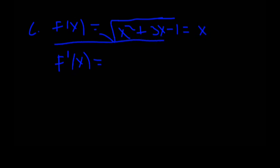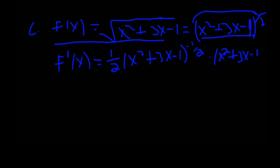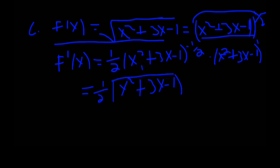f(x) equals the square root of (x squared plus 3x minus 1), which is (x squared plus 3x minus 1) to the power of 1 over 2. Using the chain rule, the derivative is 1 over 2 times (x squared plus 3x minus 1) to the power of 1 over 2 minus 1.